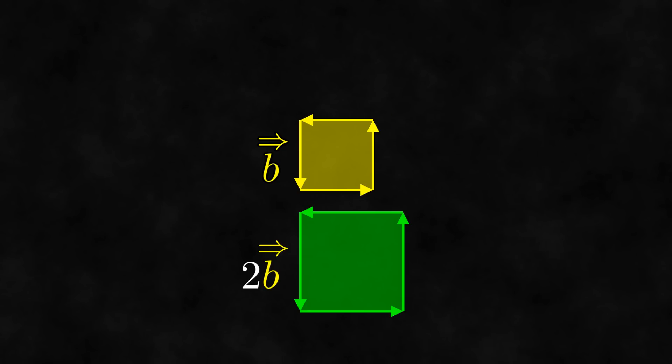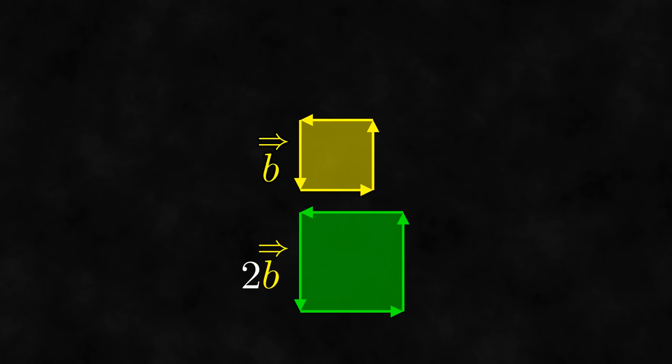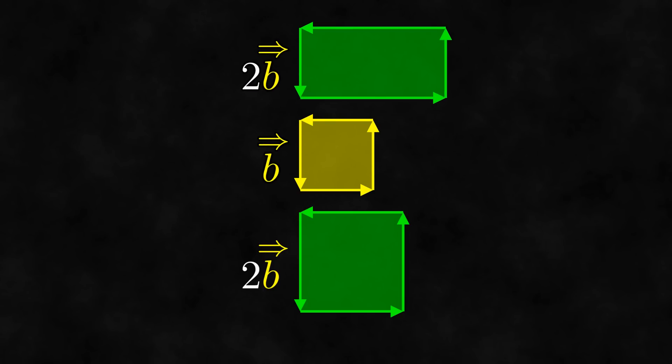If we had doubled the length of each side, the area would actually be multiplied by 4, since we can fit 4 copies of the original bivector inside. When scaling bivectors, we only care about the area, not the length of the sides. Thus, to scale the bivector by 2, you have to multiply each side length by the square root of 2. If you want to be sneaky, you could also just scale it in one direction by 2, although this doesn't scale the shape of the bivector uniformly, so it might feel a little weird, even though it is valid.